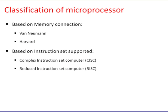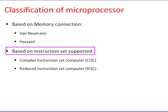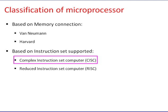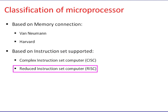Microprocessors are classified first based on memory connection: Von Neumann and Harvard. They are also classified based on instruction set architecture (ISA): Complex Instruction Set Computer (CISC) and Reduced Instruction Set Computer (RISC).